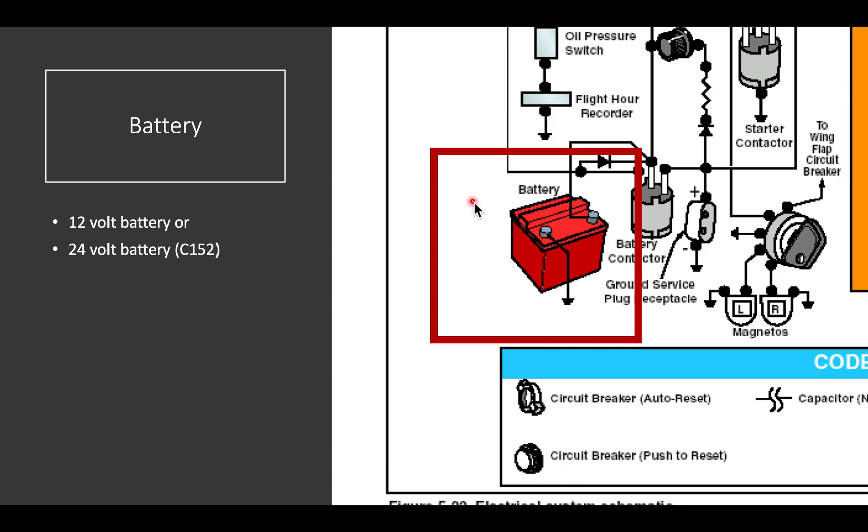It's important because sometimes you'll arrive for your flight and your battery will be too weak to turn the engine, in which case you need to call line service and have some external power applied. And if you apply the wrong voltage, you could damage the system or even cause a fire.